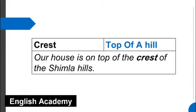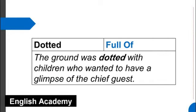Crest means top of a hill. Example sentence: Our house is on top of the crest of the Shimla Hills. Dotted means full of. Example sentence: The ground was dotted with children who wanted to have a glimpse of the chief guest.